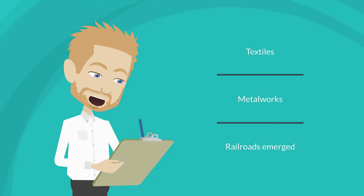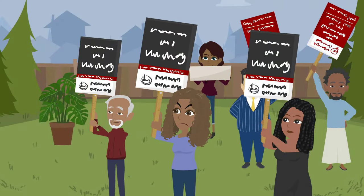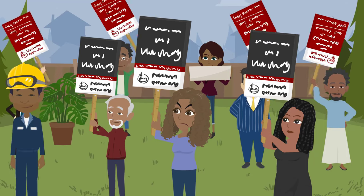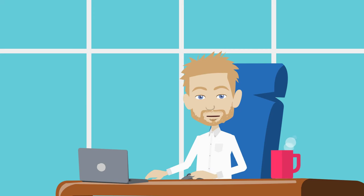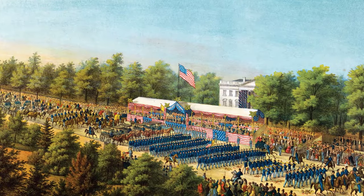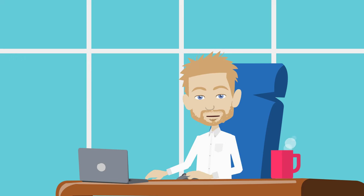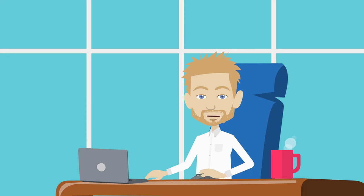The Civil War and Reconstruction. The Civil War represented a significant economic and social upheaval in US history. As the North and South clashed over issues of slavery, states' rights and economic interests, the war disrupted trade, agriculture and commerce, leading to inflation, shortages and economic hardship. The Union's victory in 1865 paved the way for the abolition of slavery and the reunification of the country. The Reconstruction era that followed sought to rebuild the south and integrate formerly enslaved individuals into society, but it also witnessed the emergence of segregation and discrimination.